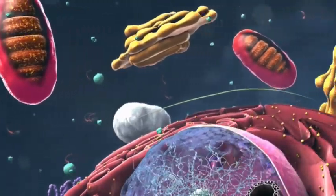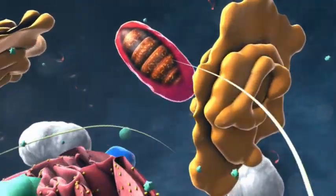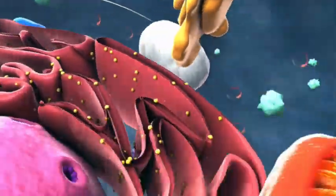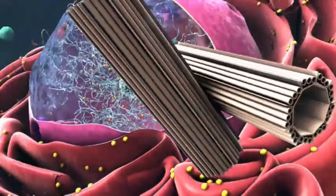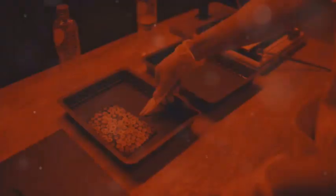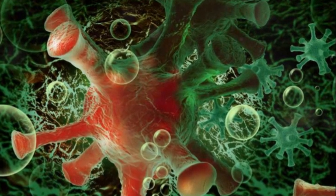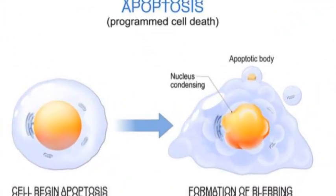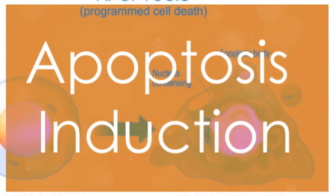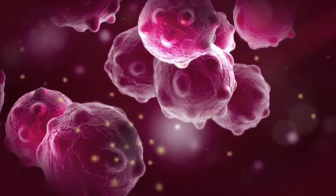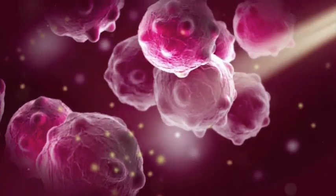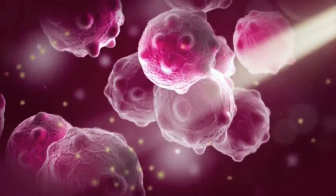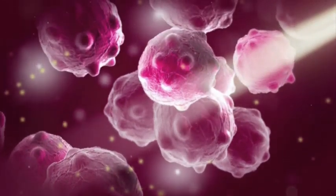After binding to cell surface receptors, ricin is endocytosed and transported retrogradely through the Golgi apparatus to the endoplasmic reticulum (ER). In the ER, the disulfide bond linking the A and B chains is reduced, allowing the A chain to translocate into the cytosol where it exerts its toxic effect.